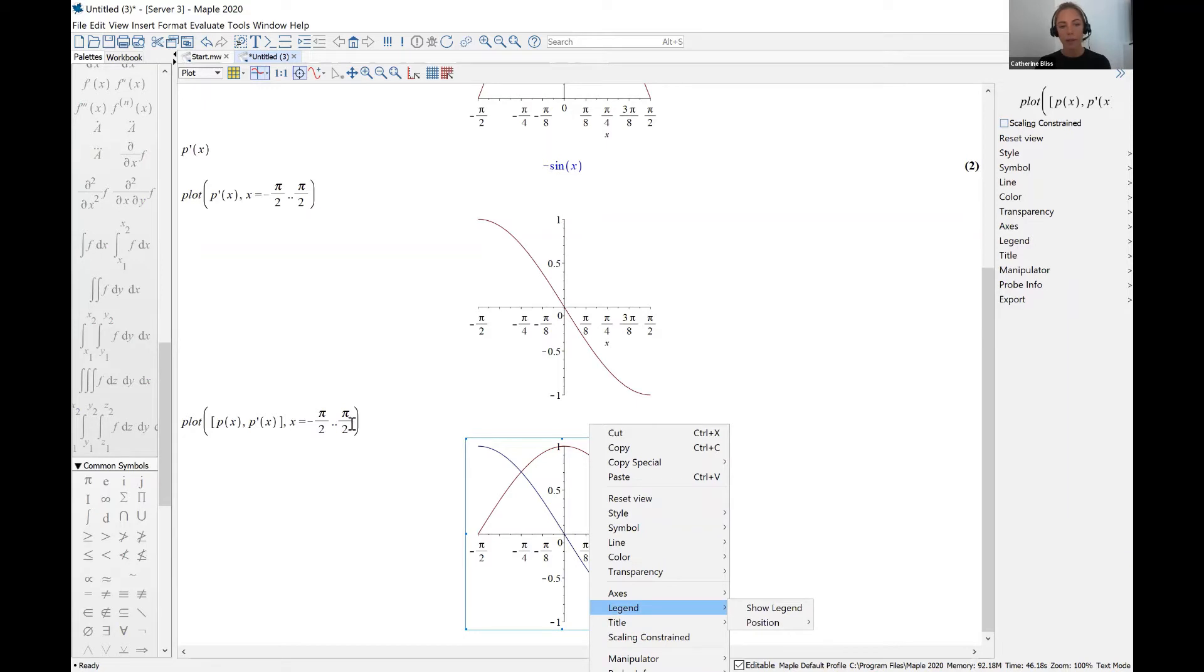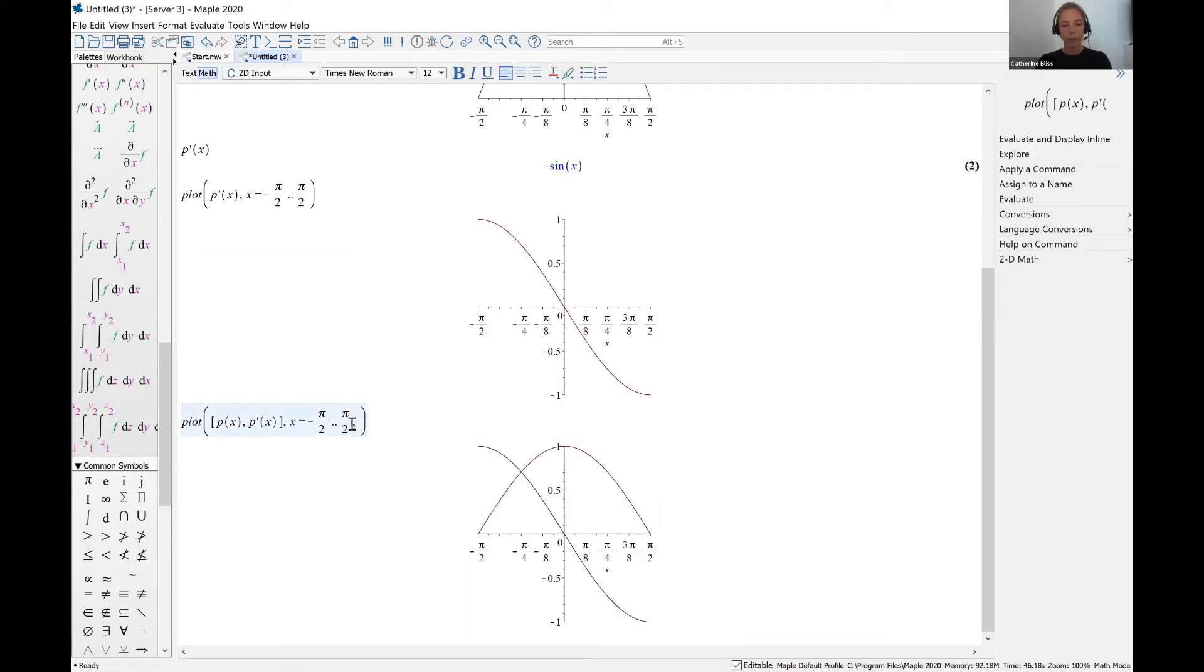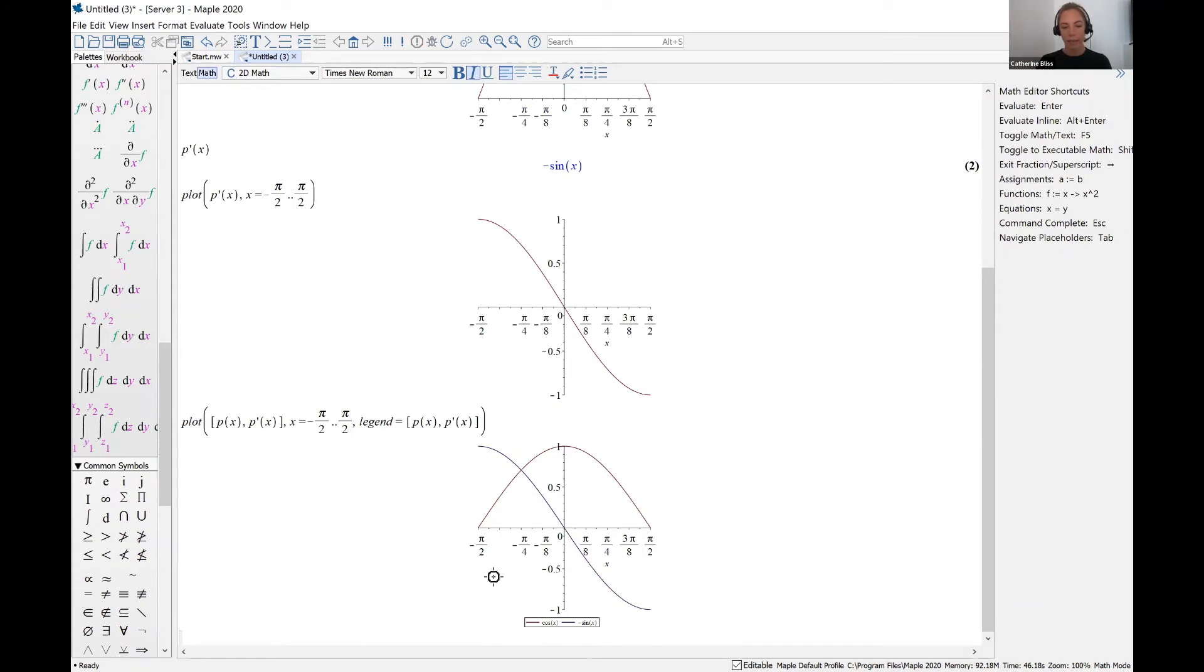The other thing that you could do is you could put comma, legend equals square bracket, p of x, p prime of x, close square bracket, you can put that in the command line. And then you can see that Maple did include the legend, right there.